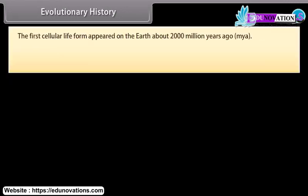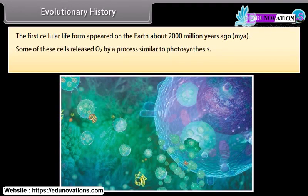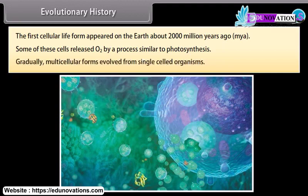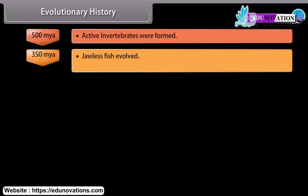The first cellular life form appeared on the earth about 2,000 million years ago. Some of these cells released oxygen by a process similar to photosynthesis. Gradually, multicellular forms evolved from single-celled organisms, and further evolution can be traced from there.